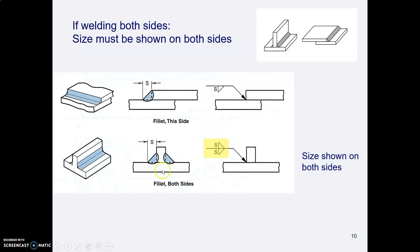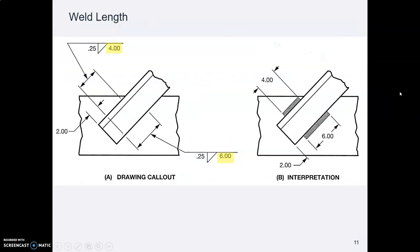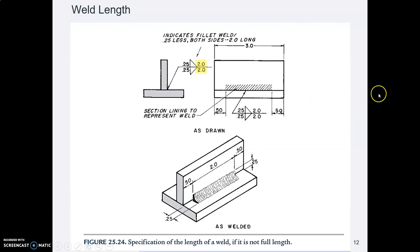If you want them to weld on both sides, you must put the weld size on both sides. So if this were a quarter inch weld, you'd write a quarter fillet weld below and a quarter fillet weld above. If you need to tell them about length, the length goes on the right side of the symbol. This one means make a weld four inches long. This one means make a weld six inches long.